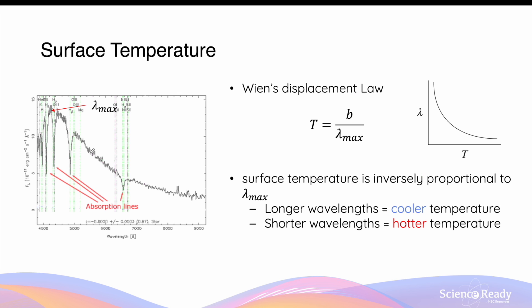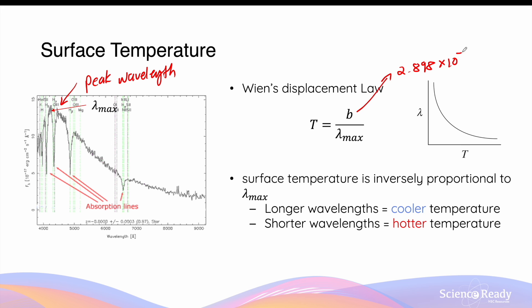The intensity of electromagnetic radiation emitted by a star varies with its wavelength. The wavelength at which the maximum intensity is observed is used in Wien's displacement law to calculate the star's surface temperature. This peak wavelength, also known as lambda max, is inversely proportional to the surface temperature: T equals Wien's constant B (2.898 × 10⁻³) divided by the peak wavelength.